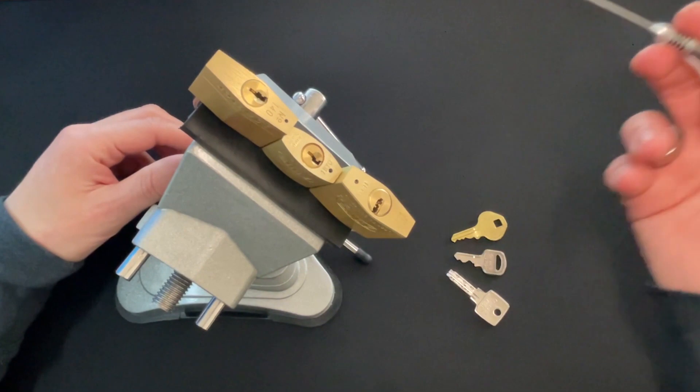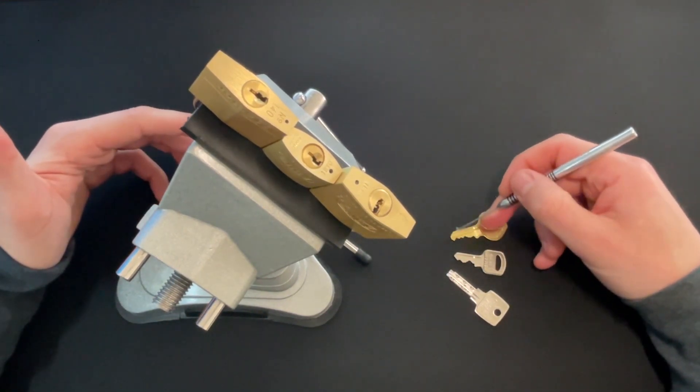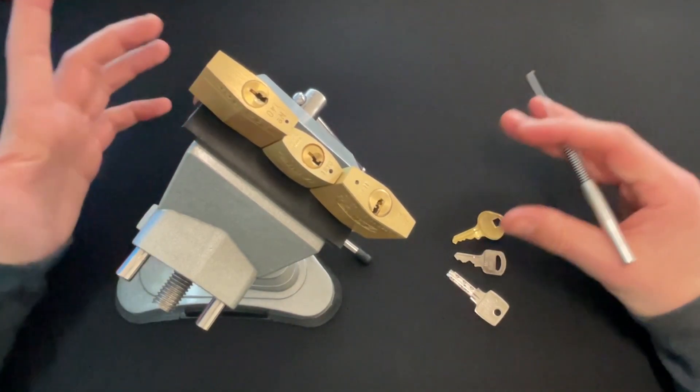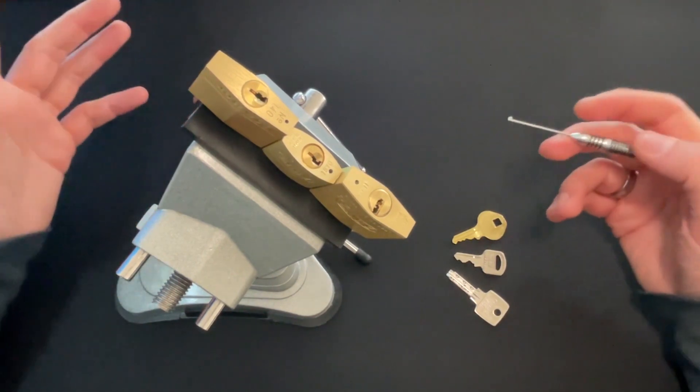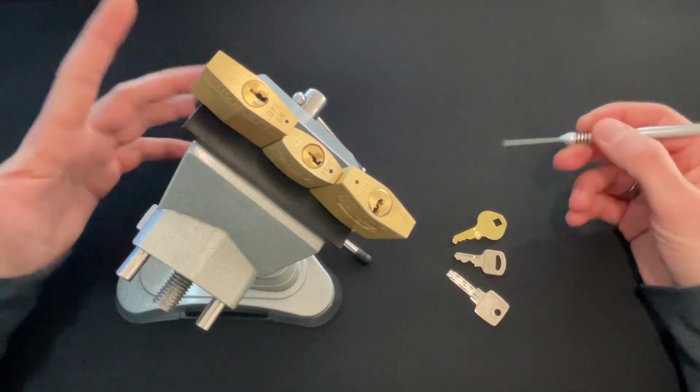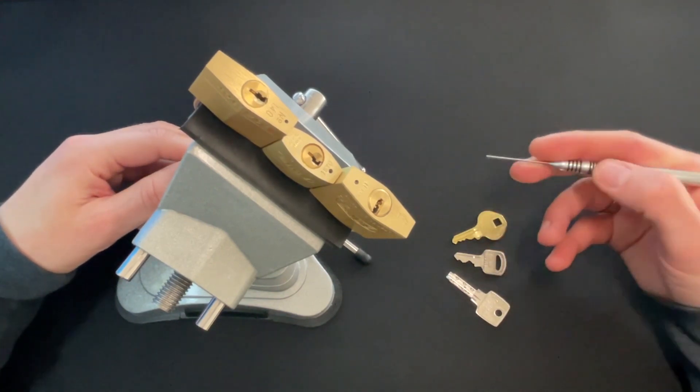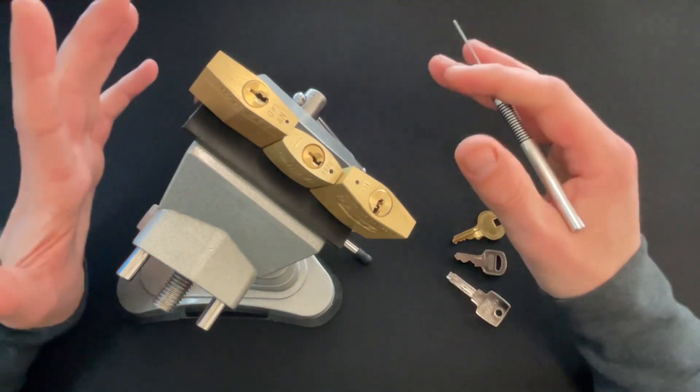And the second thing is the amount of pins. With the Master Lock, we have four and the Abus has three. Throw in a couple of spools. And yeah, you have a little bit of a nice challenge. Here though, we have six pins and I felt like five spools in there. But that's not all.